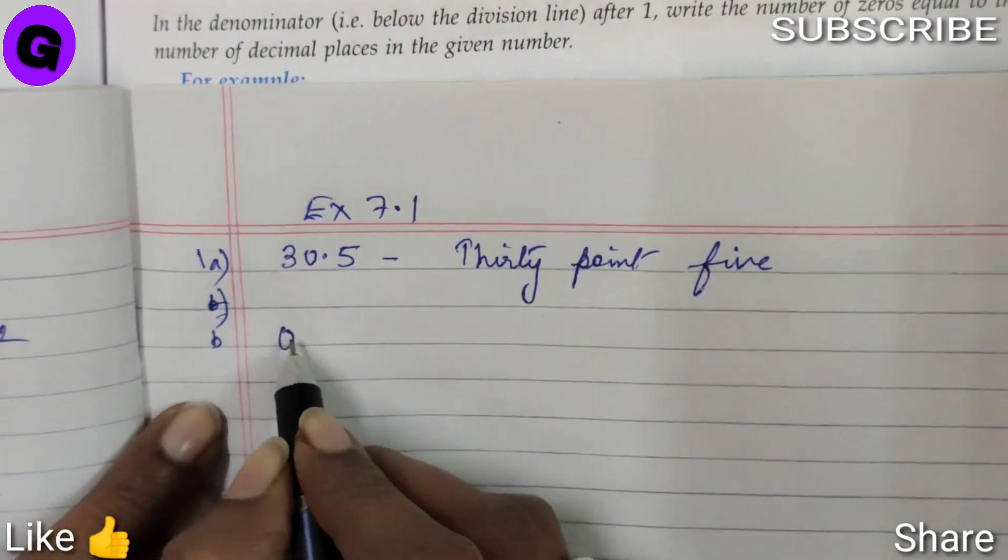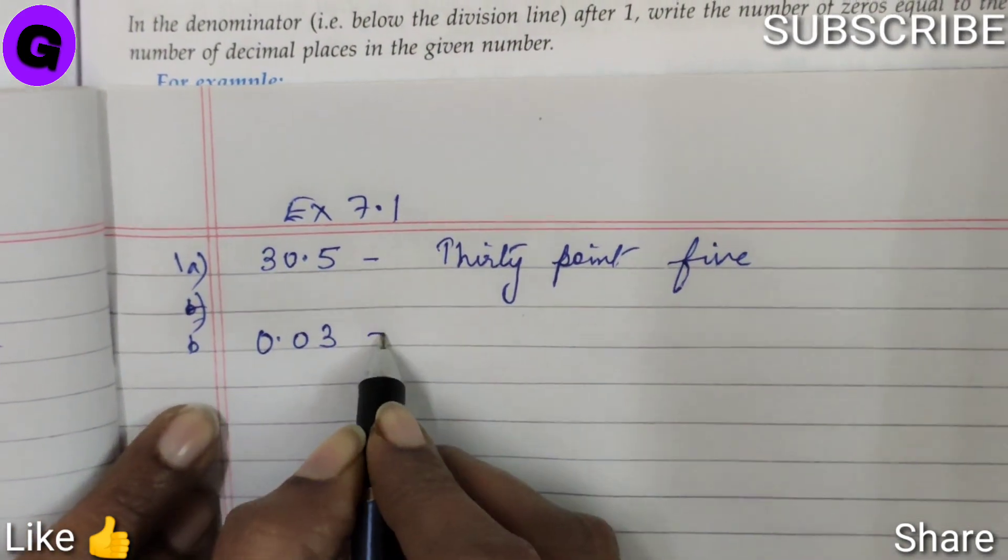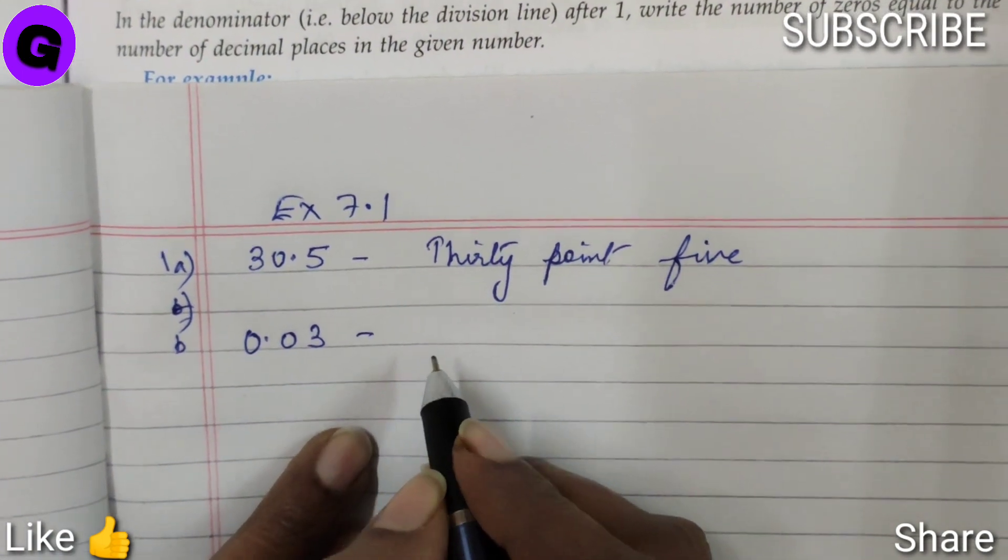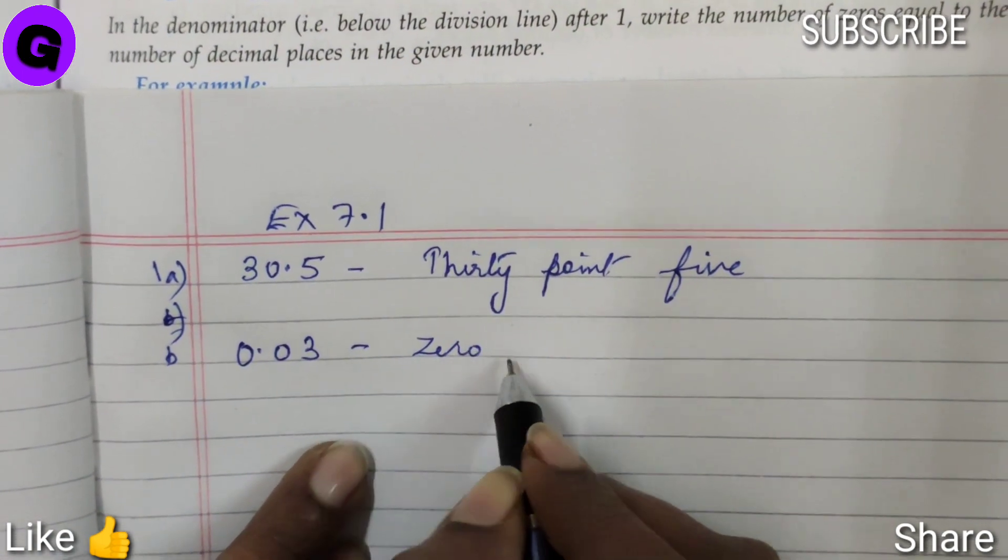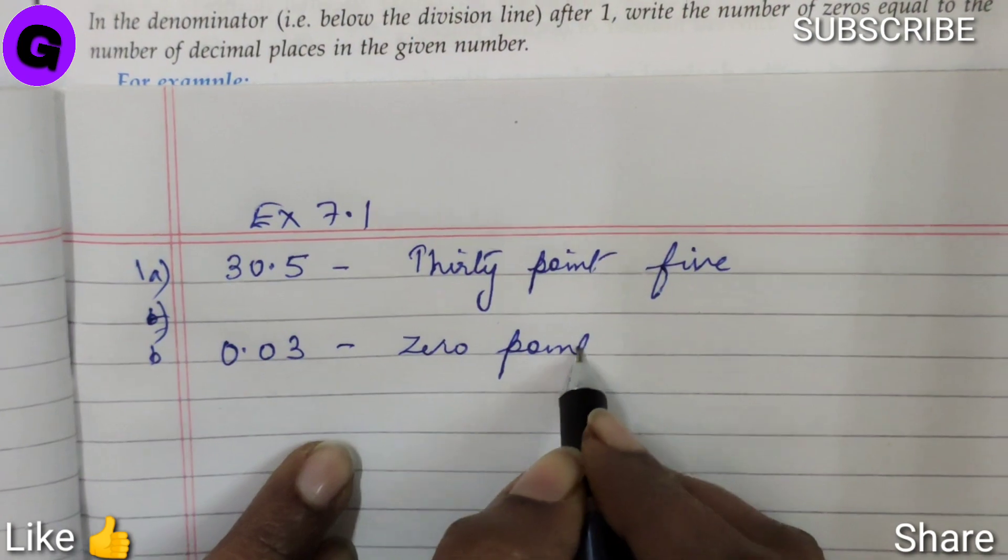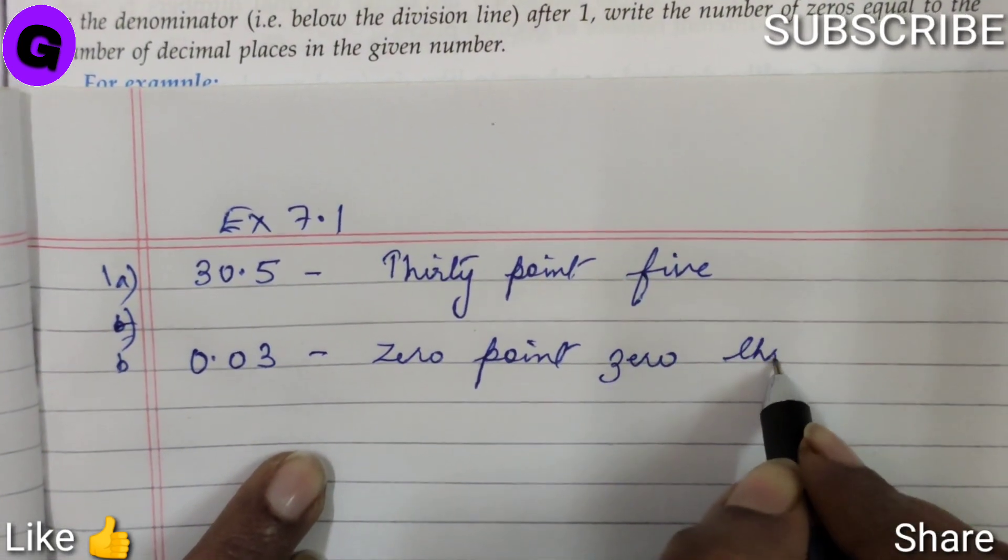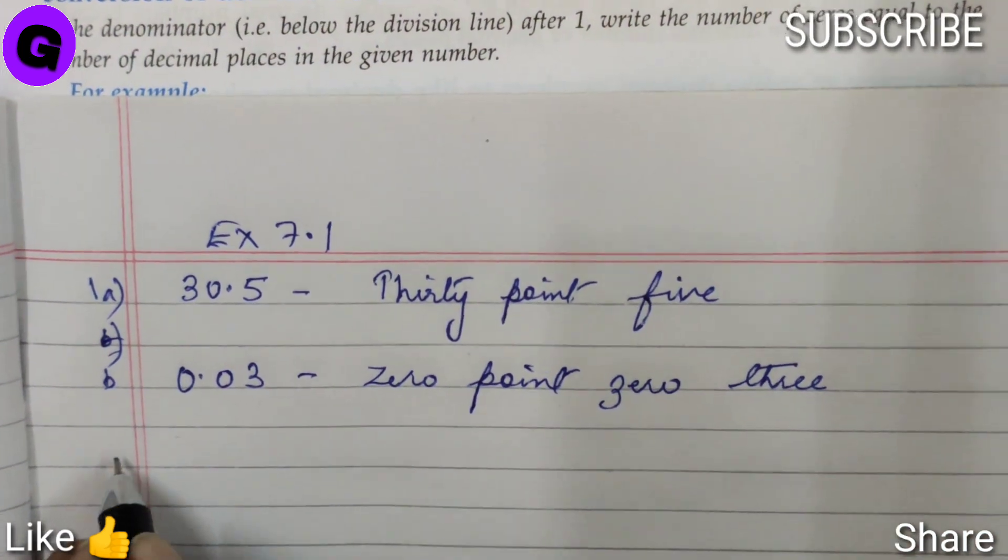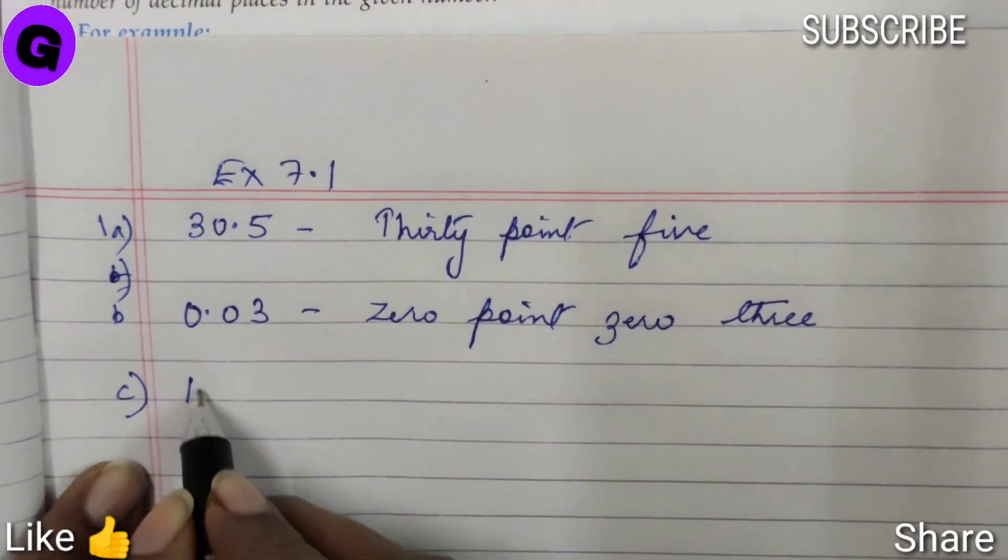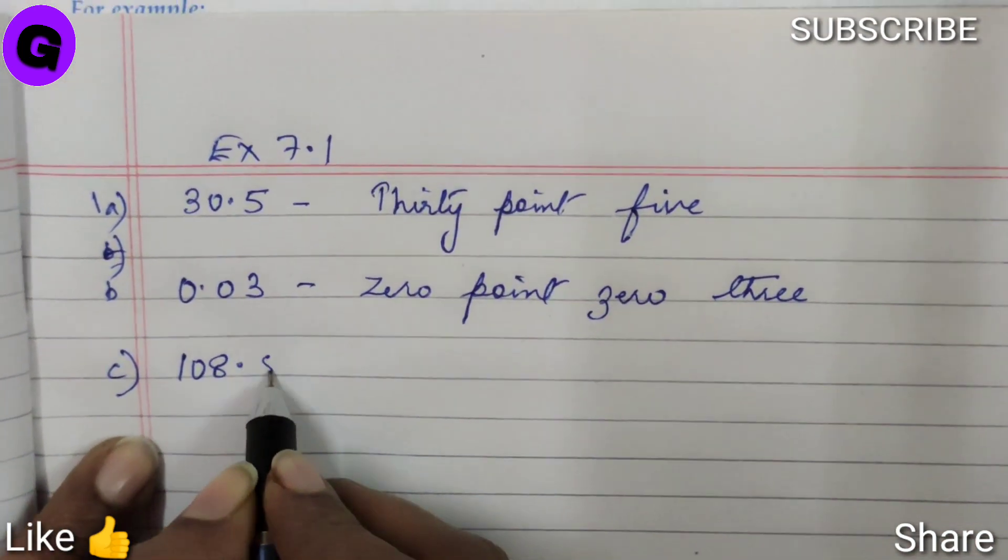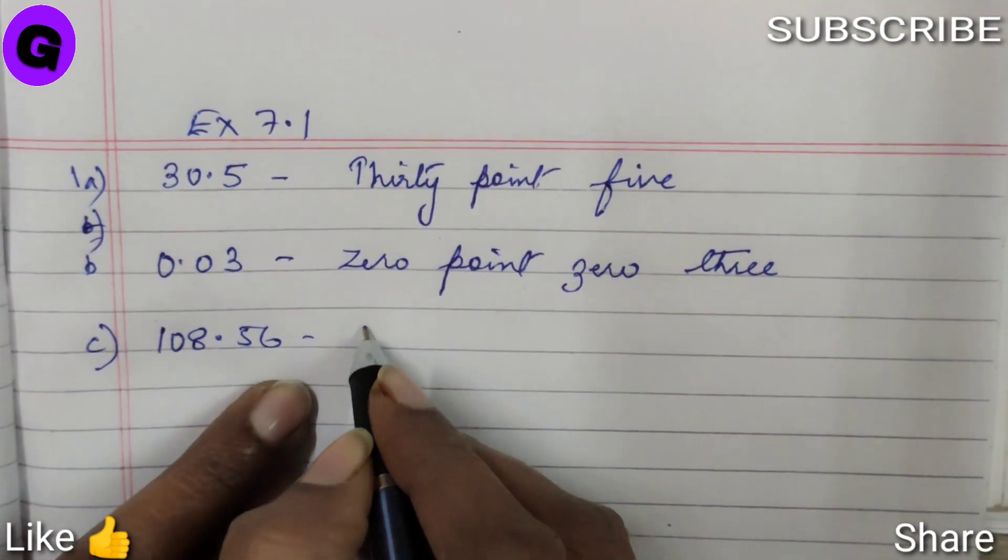0.03, it will be written 0.03. Subpart C, 108.56, we will write.